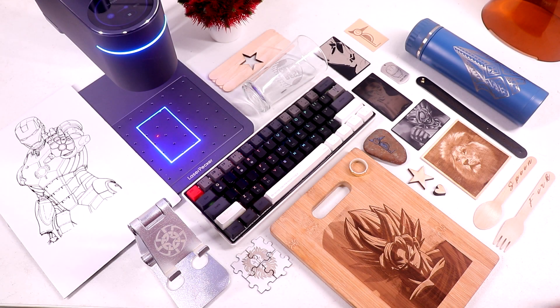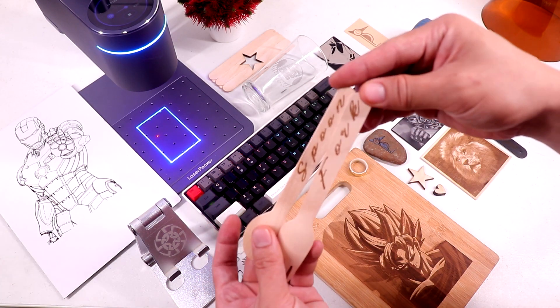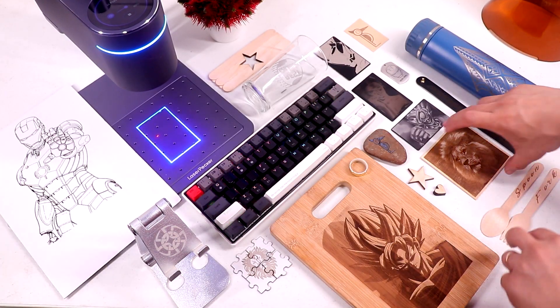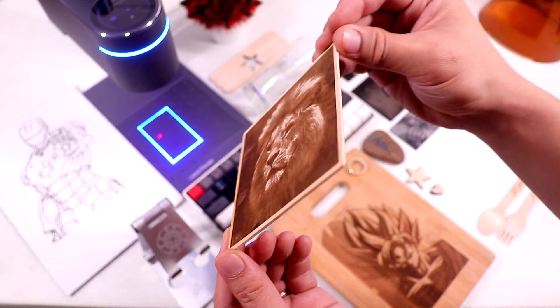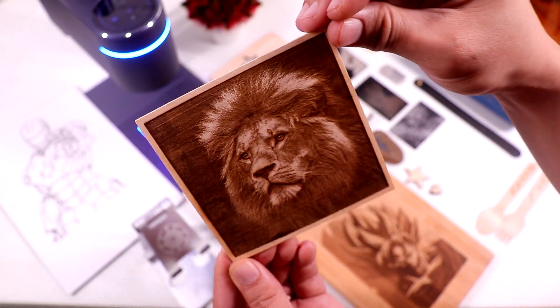So here are all the finished products. So we got some wooden spoons and by the way, you can do it on metal spoon as well. And here's my favorite one. I really love the outcome. It almost looked like a 3D lion. The details are amazing.